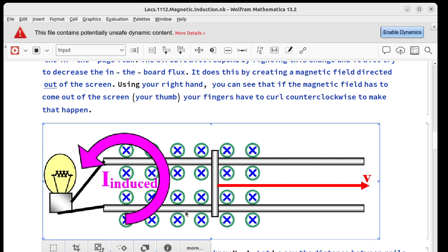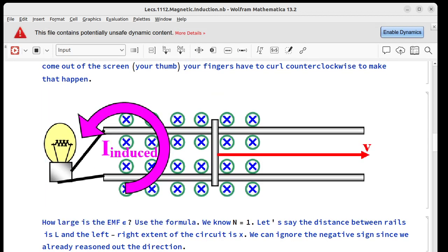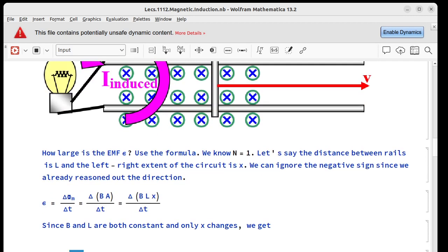So ΔBA/Δt is the same thing as Δ(BLX)/Δt. Now B doesn't change, L doesn't change. The only thing that changes is X. So we can take B and L out of this parentheses and write BL(ΔX/Δt). But since last semester, we've known ΔX/Δt is V. Again, keep in mind V is velocity of the bar, lowercase v, not capital V voltage. This is what represents our potential, our voltage.